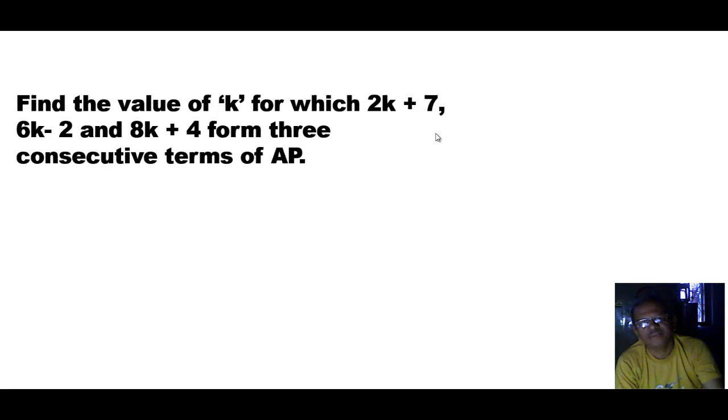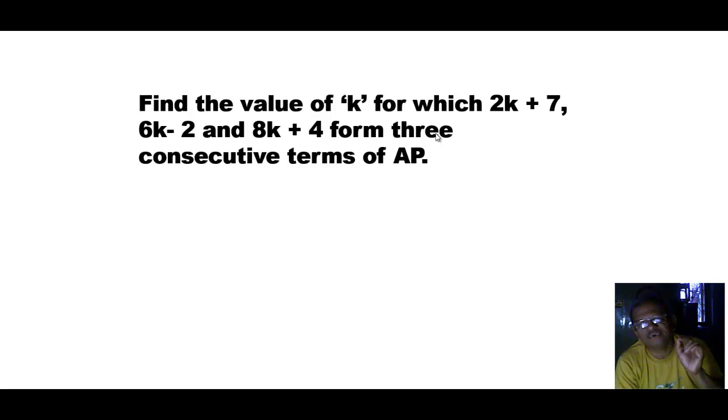Friends, today we will see a few more sums from Arithmetic Progression. Here is the first question on the screen: find the value of k for which 2k plus 7, 6k minus 2, and 8k plus 4 form three consecutive terms of an AP.